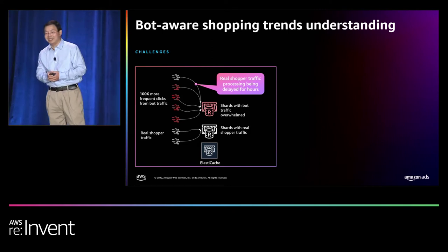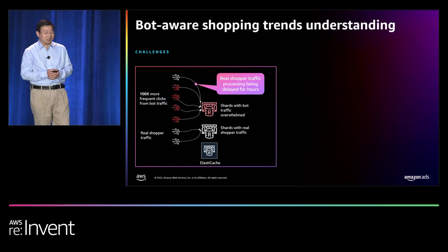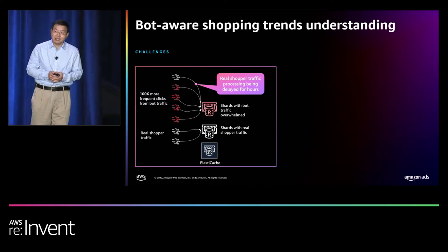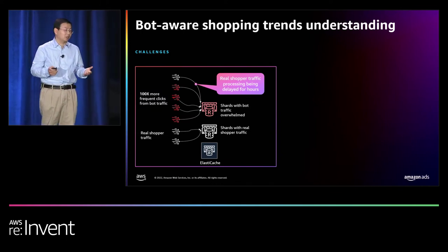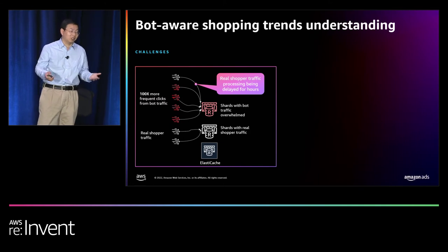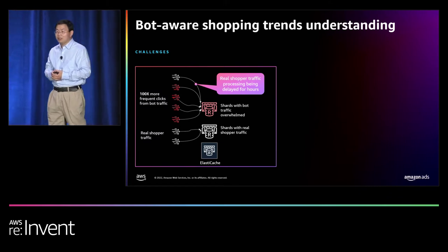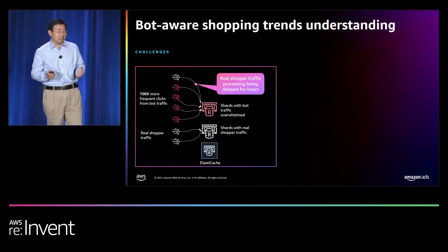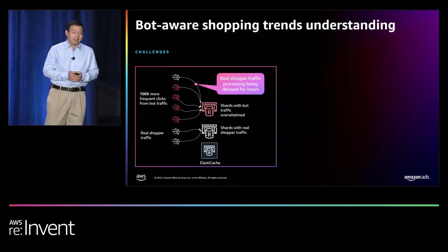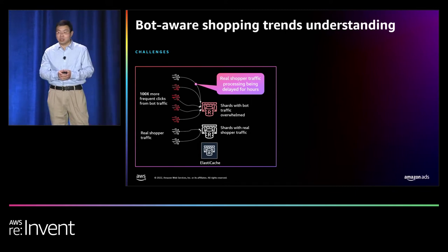However, the challenge we face is not on the AWS system itself — it's more about real production use cases. Bot traffic is everywhere. To deal with online real-time traffic understanding, we have to deal with bot traffic as well. Bot traffic impacts shopping trend understanding in two ways. First, it can introduce noise: bots click more than 100 times more than a real shopper, so in a short time you may detect what looks like a shopping trend, but it's actually coming from bot traffic. Second, it challenges the system: if Kinesis or ElastiCache is processing bot traffic constantly for reads and writes, it will delay processing of real shopper traffic, causing hours of delay and causing real trends to be missed.